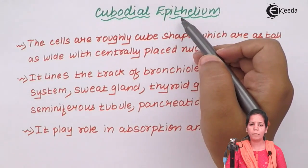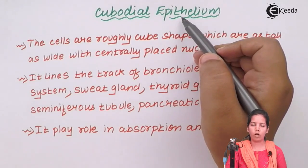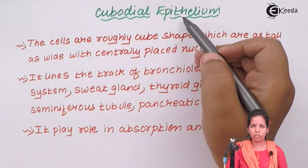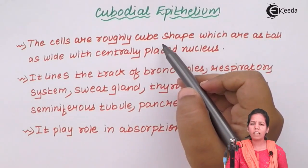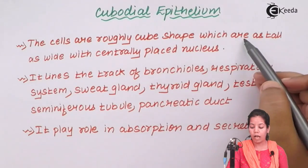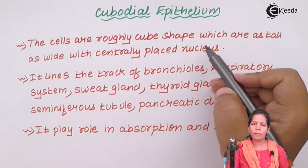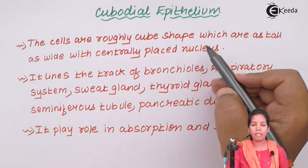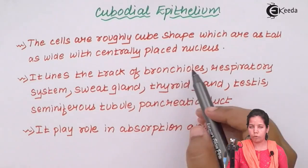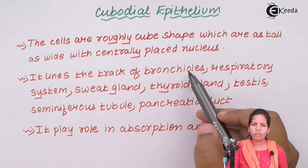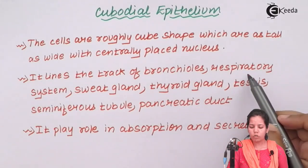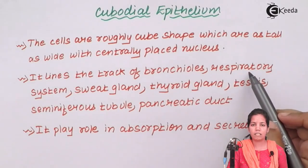Cuboidal epithelium is a type of simple epithelial tissue, apart from squamous epithelium. The cells of this tissue are roughly cube-shaped, tall and wide, and have a centrally placed nucleus. There is hardly any presence of matrix or cementing substance, but there is a basement membrane on which the cells are closely arranged. It lines the bronchioles and bronchi of the respiratory system — remember, the trachea (windpipe) divides into branches called bronchioles and bronchi. The respiratory system from the trachea through the bronchioles, bronchi, and alveoli may also be covered with cuboidal epithelium.